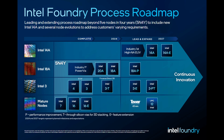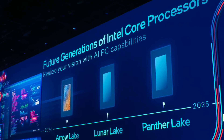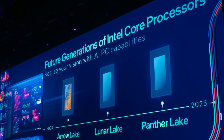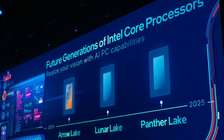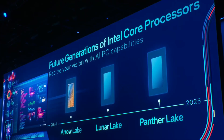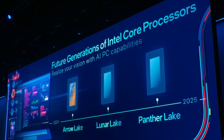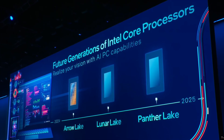I'm honestly looking forward to this, because with GAA and backside power, Intel could have a truly great process node on their hands. In 2025, 18A will follow, most likely with Panther Lake. And if 18A is as good as Intel claims, we might see plenty of other non-Intel chips produced in 18A by Intel's new foundry business.